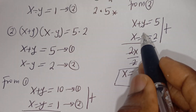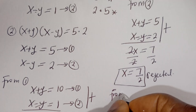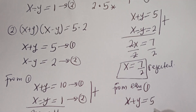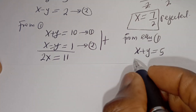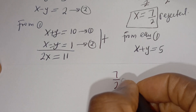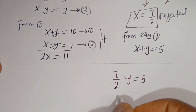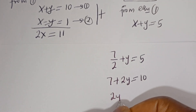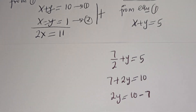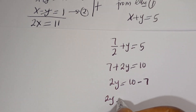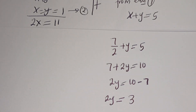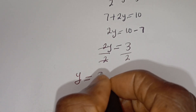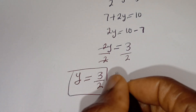Now let's solve for Y using equation 1: X plus Y is equal to 5. When X is 7 over 2, we have 7 over 2 plus Y is equal to 5. Multiplying through by 2: 7 plus 2Y is equal to 10. Then 2Y is equal to 10 minus 7, so 2Y is equal to 3. Dividing both sides by 2, Y is equal to 3 over 2. This is not a natural number, so it is rejected.